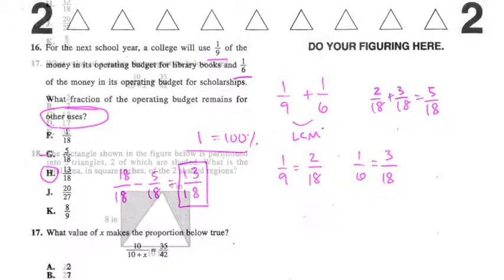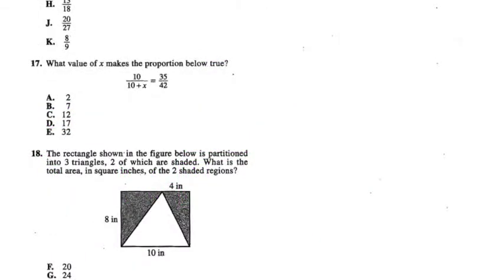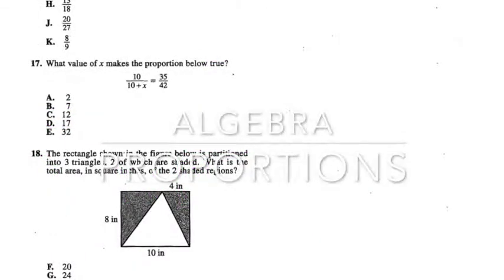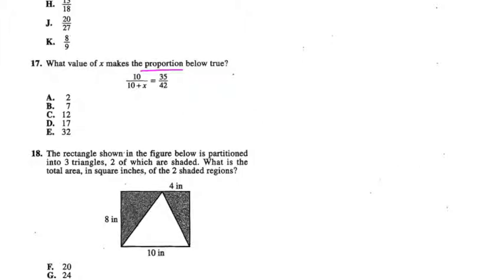Number 17 is an algebra question about proportions. What value of x makes the proportion below true? We have this proportion here with an x in the denominator on the left-hand side. What I would do is back solve, so I would choose C and plug that in.